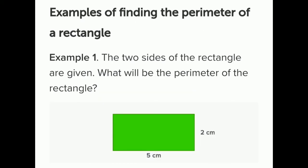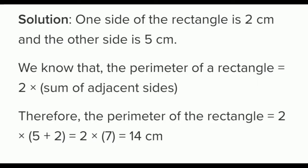Example 1: The two sides of a rectangle are given. What will be the perimeter of the rectangle? The two sides are 2 cm and 5 cm. As we know, opposite sides are equal in a rectangle. The perimeter of a rectangle equals 2 into the sum of adjacent sides. Therefore, the perimeter is 2 into (5 plus 2), which is 2 into 7, which equals 14 cm.